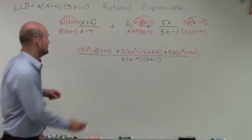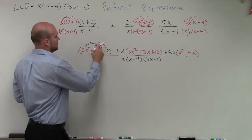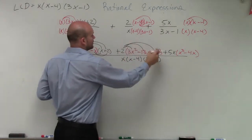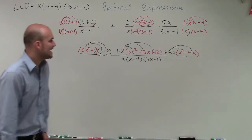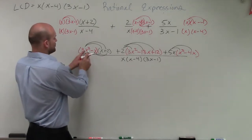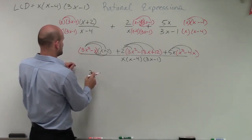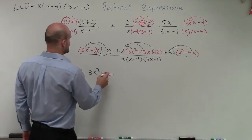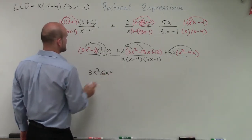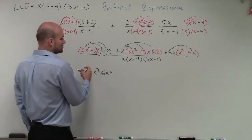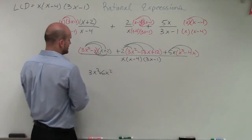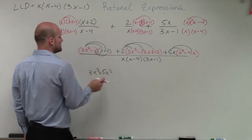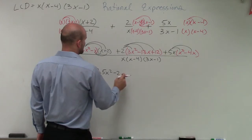Now let's simplify by applying the distributive property again. 3x² times x gives 3x³; 3x² times 2 gives positive 6x²; negative x times x gives negative x², which combined with the 6x² term gives 5x²; and negative x times 2 gives negative 2x.